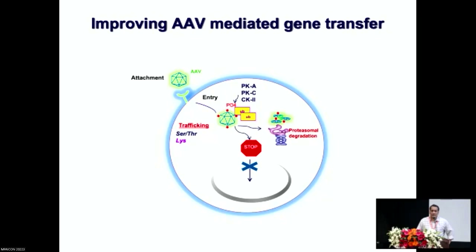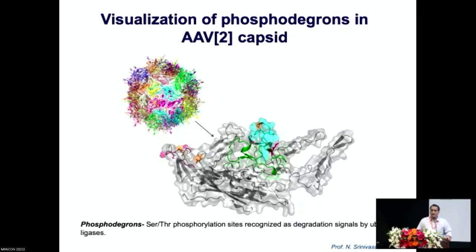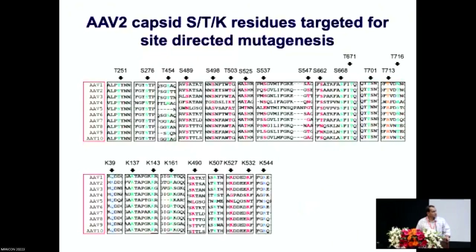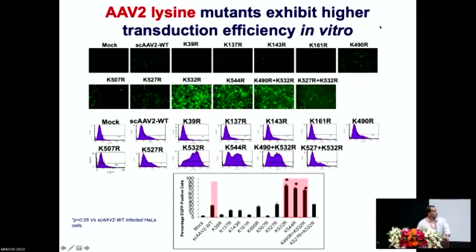How do you do this? You identify those residues that are specifically phosphorylated and ubiquitinated, mutate them, and try to see what the outcomes are. We did a structural mapping of the potential residues that could be phosphorylated or ubiquitinated — we call these phosphodegrons. Once we identified the phosphodegrons, we started modifying the amino acids in and around them and studied the impact in terms of gene expression. As a first step, you always use a reporter gene.